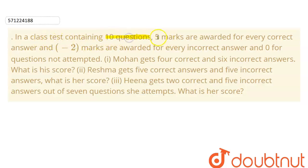Five marks are awarded for every correct answer, and minus 2 marks are awarded for every incorrect answer, and zero marks are awarded for questions not attempted. So our first part is: Mohan gets 4 correct and 6 incorrect answers. What is his score?